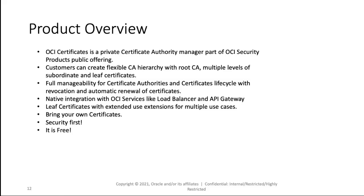The OCI Certificate Service will allow you to create a flexible CA hierarchy, however you want to organize it. We allow you to create your chain up to 10 nodes deep, and you'll be able to create about 100 CAs if you need to. It's fully managed for all certificate authorities and the certificate lifecycle, including revocation and automatic renewal. We have native integrations for services like the load balancer, and the API gateway is going to be released in the next couple of weeks. Leaf certificates have extended extensions for multiple use cases. We also support bring your own certificate, and this is part of Oracle's security-first initiative. This is a completely free service.